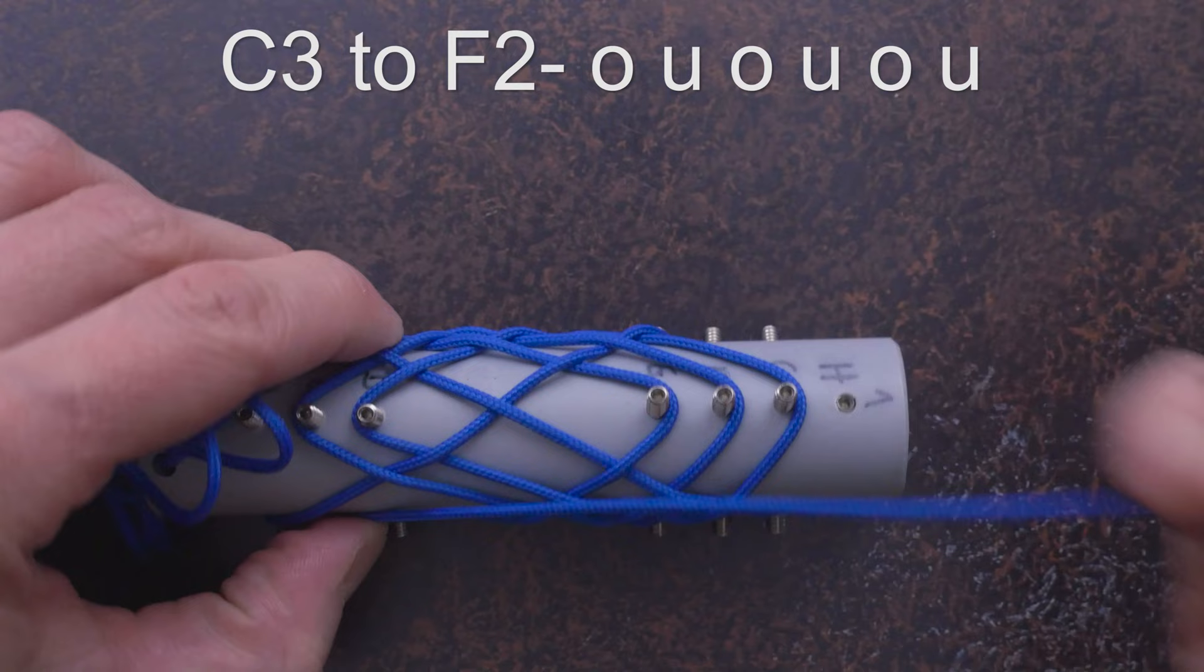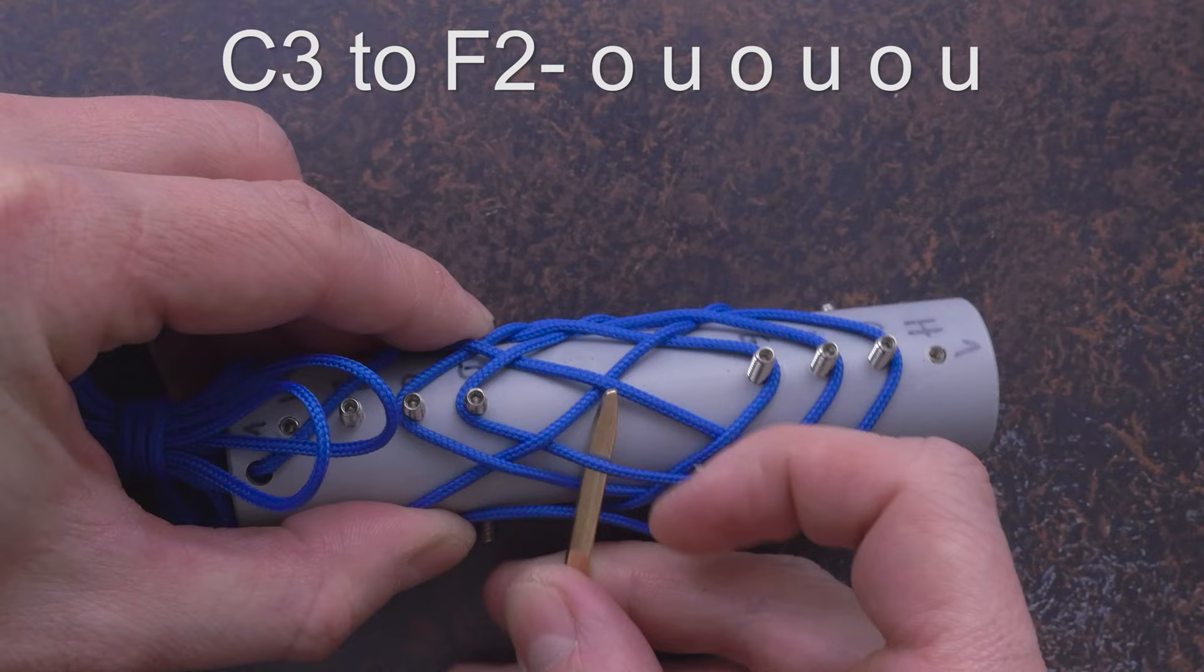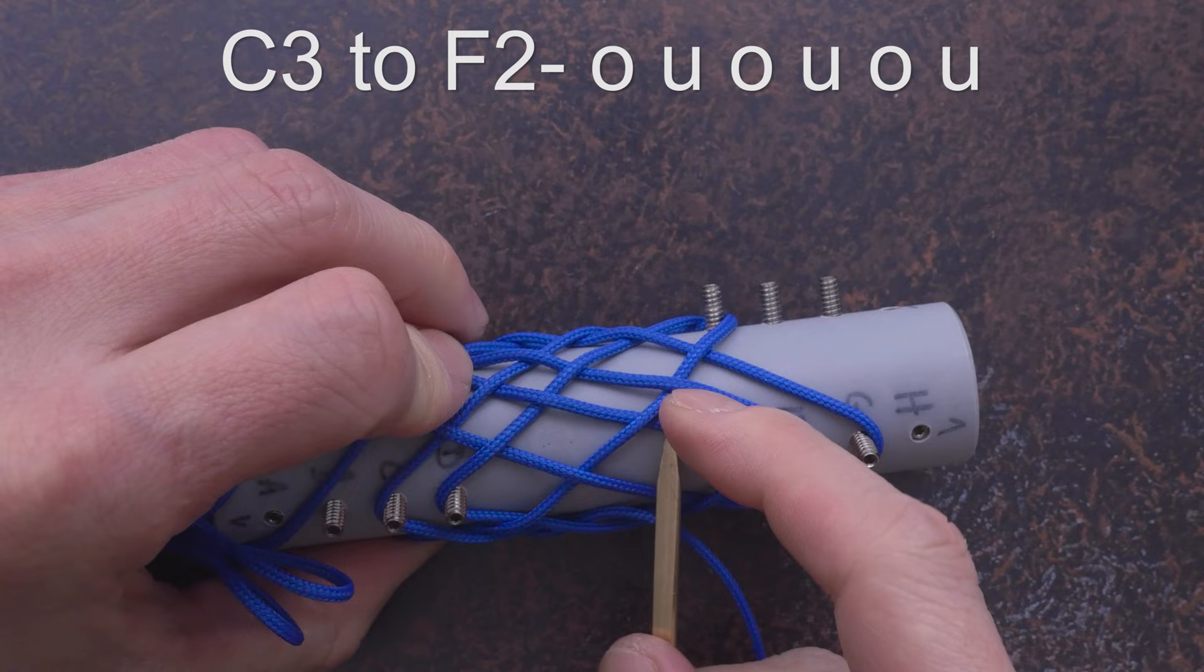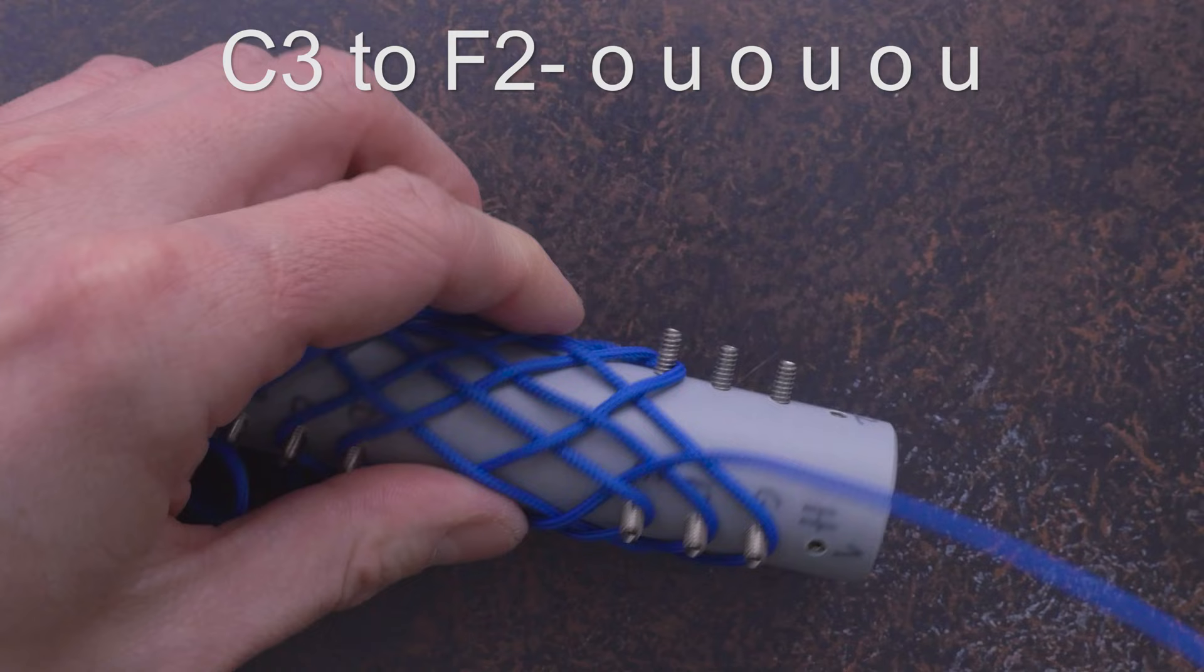From C3, we move to F2, starting over, then under, over, under, over, under, reaching F2.